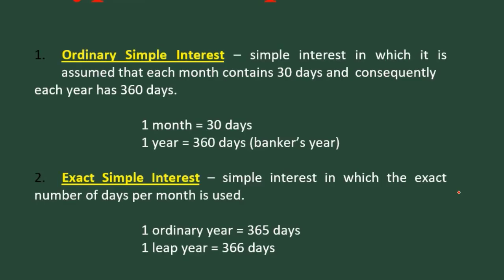For the types of simple interest, we have ordinary and exact. For ordinary simple interest, each month is assumed to contain 30 days and consequently each year has 360 days — this is what we used in our problem. It is called the banker's year. For exact simple interest, the exact number of days per month is used: one ordinary year is 365 days, and a leap year is 366 days, which happens every 4 years when February has 29 days.